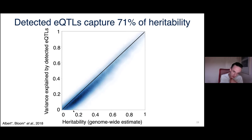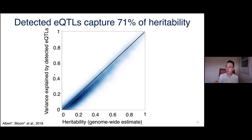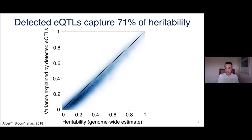On the x-axis we estimate the heritability of mRNA levels for every gene — the maximum we could hope to account for. On the y-axis is the amount of genetic variation we've actually captured with the regions we've mapped. On average we're capturing about 70% of the total genetic signal, meaning the map you're about to see is a fairly comprehensive accounting of regulatory genetic variation in the genome.